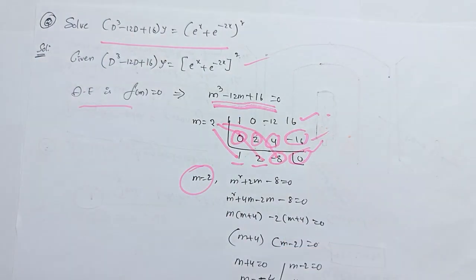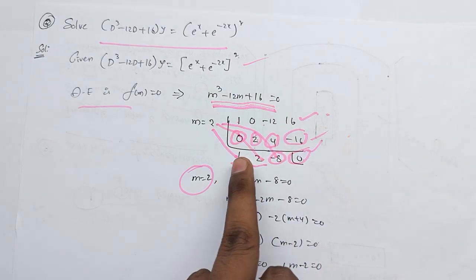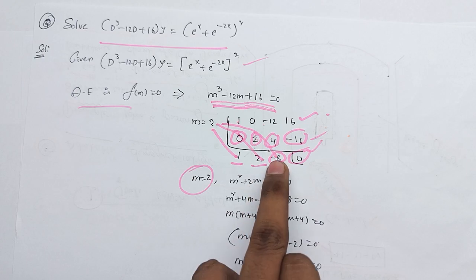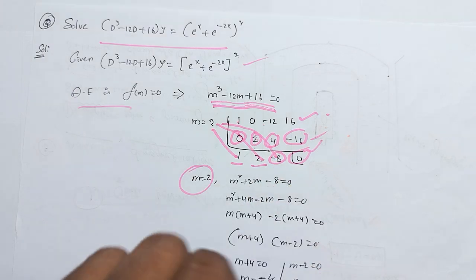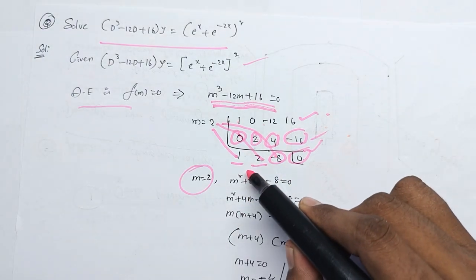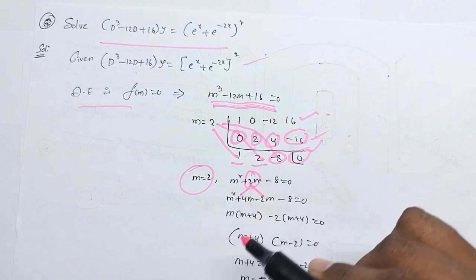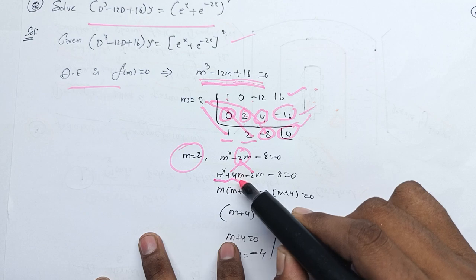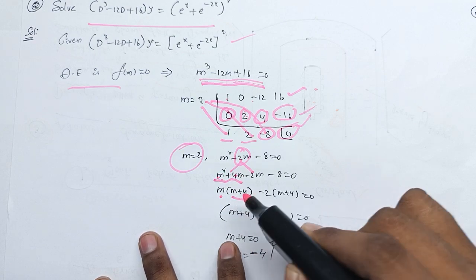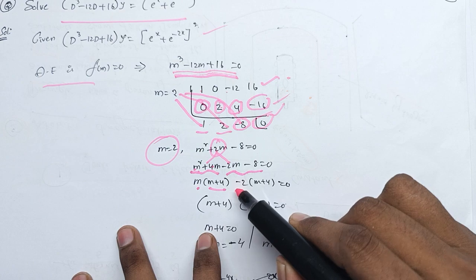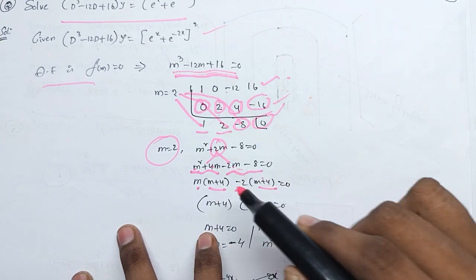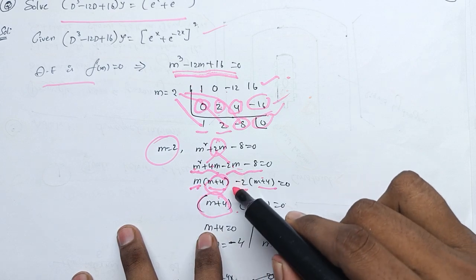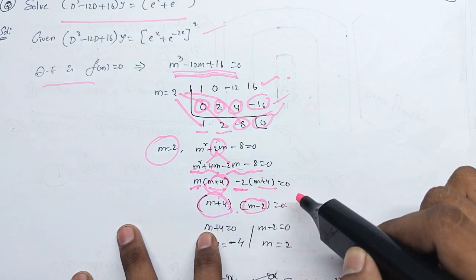m is equal to 32, so 1 in x. We have 2 times y. We are going to say 2m is equal to 4. The first term is m common, which is m plus 4; minus 2 common is m plus 4. So m plus 4 into m minus 2 is equal to 0.